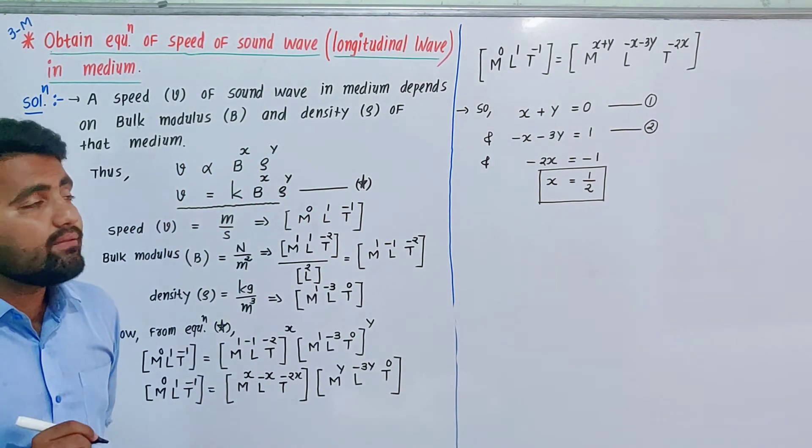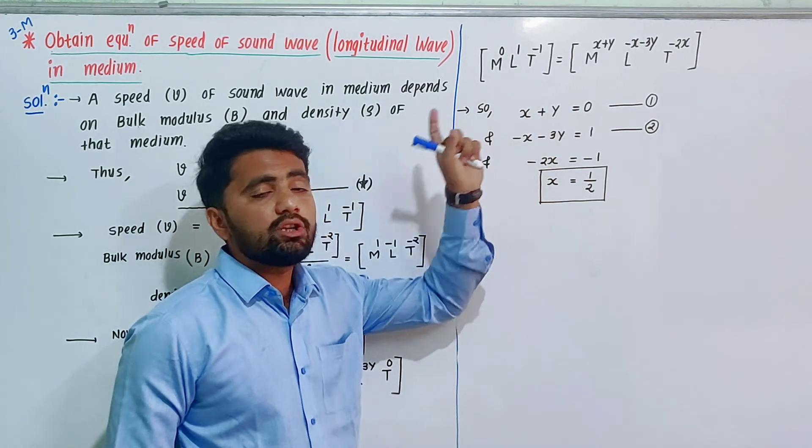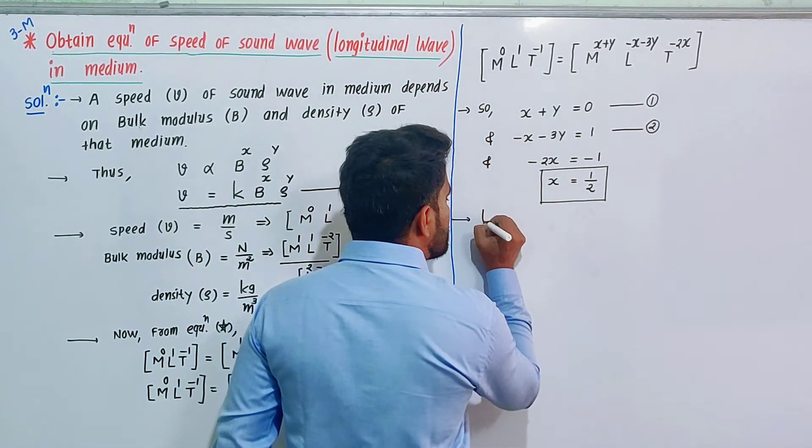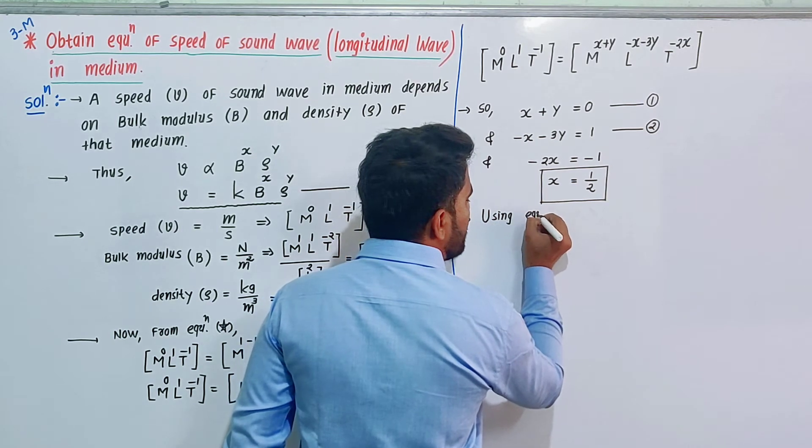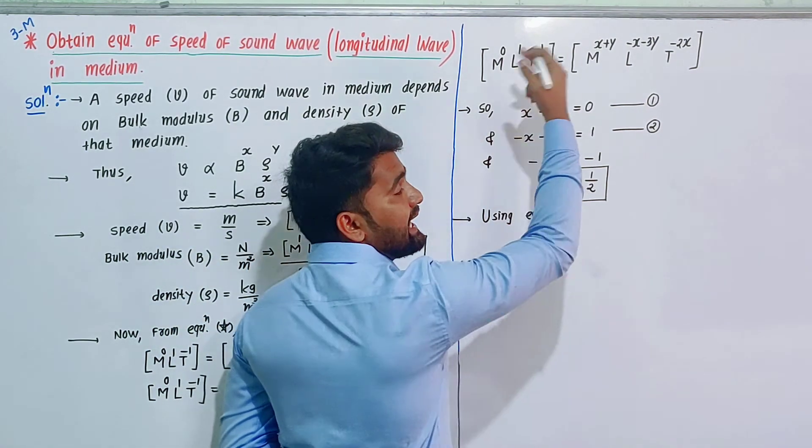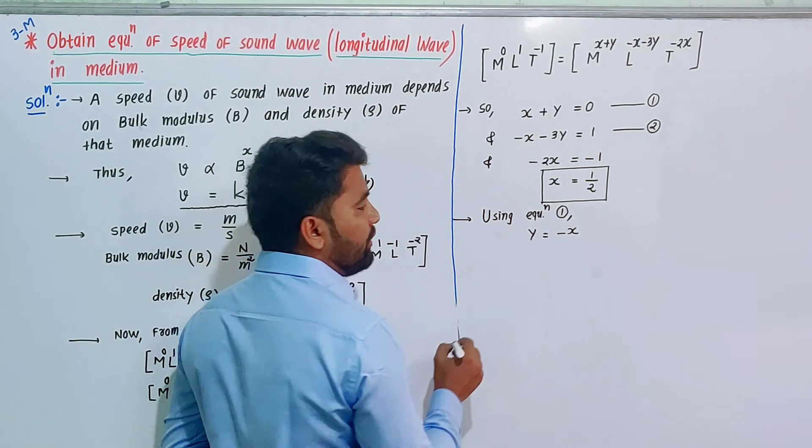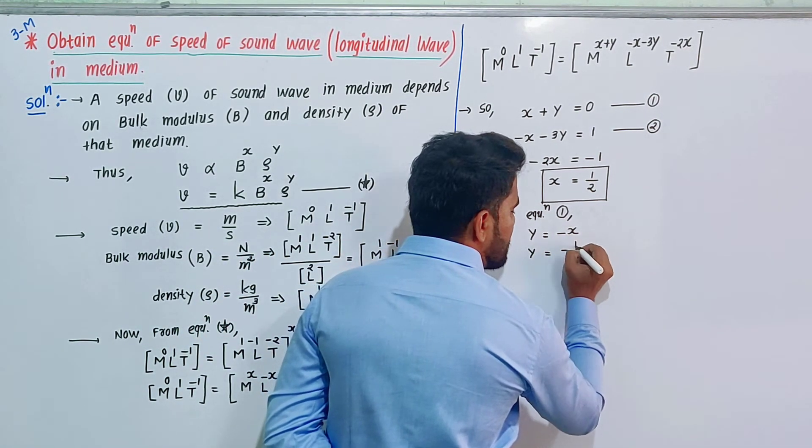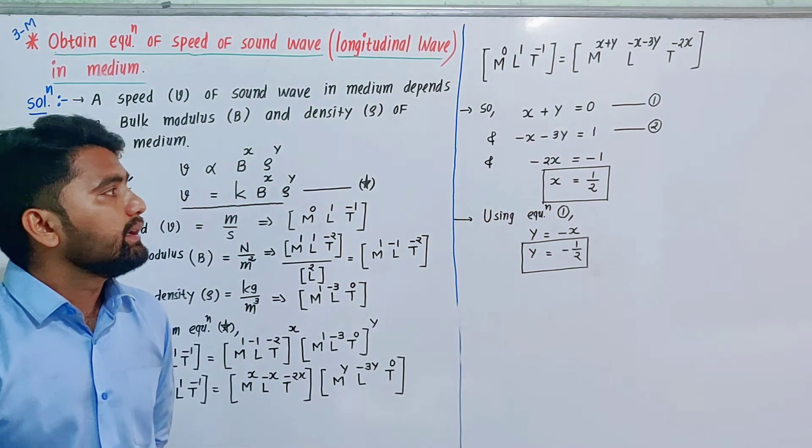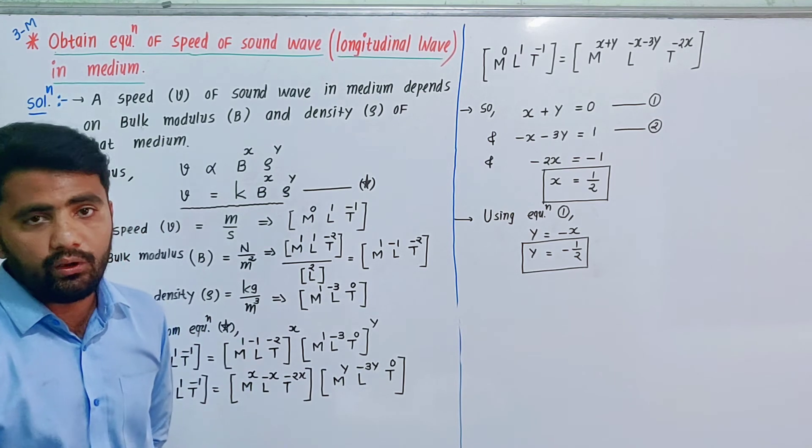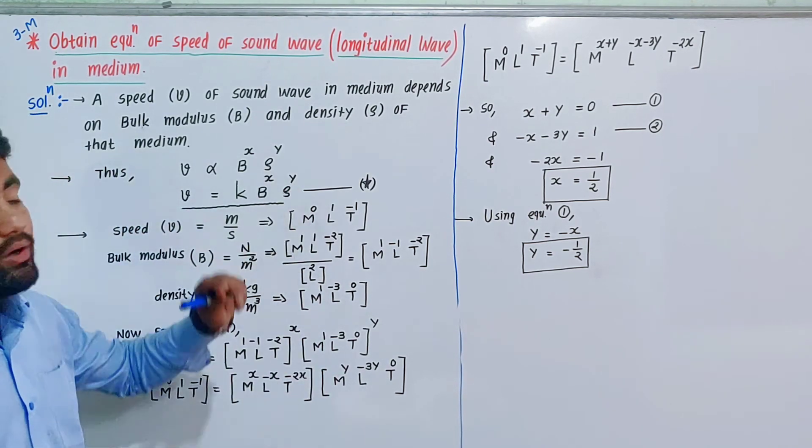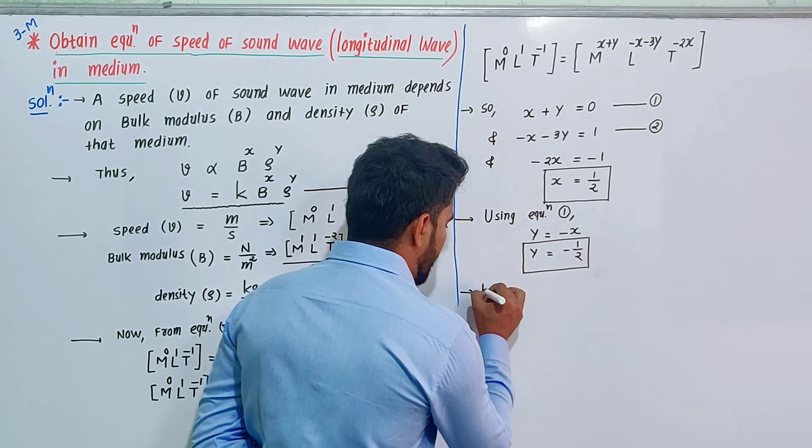How to find y? Use equation two or equation one, whichever is easier. Using equation one: y equals minus x. So y will be minus one half.